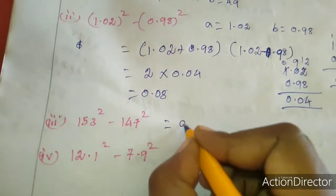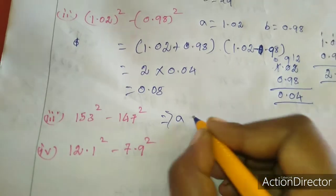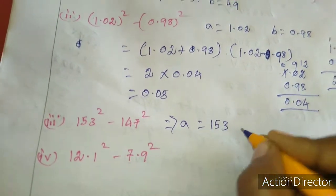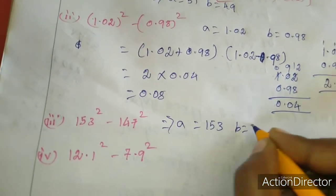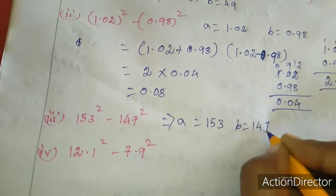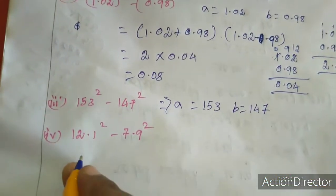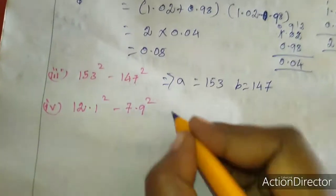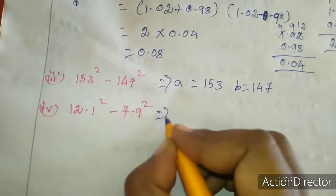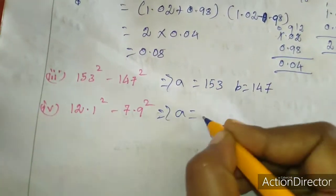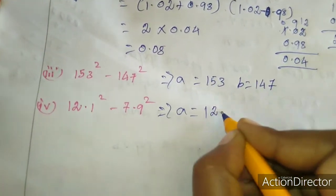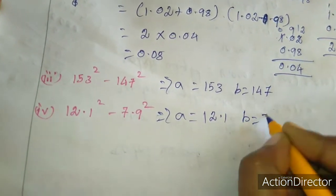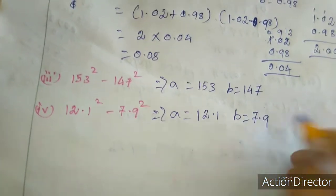For the third sum, a value is 153 and b value is 147. For the fourth sum, a value is 12.1 and b value is 7.9. We will apply the a plus b times a minus b formula to both.